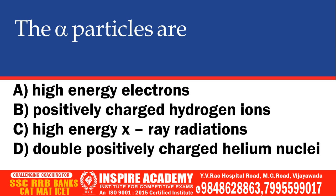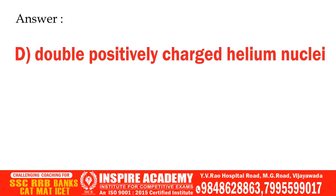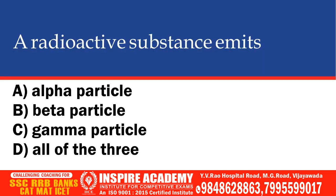The correct answer is double positively charged helium nuclei. A radioactive substance emits: alpha particles, beta particles, gamma particles, or all of the three.